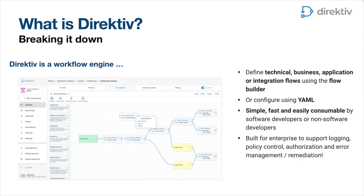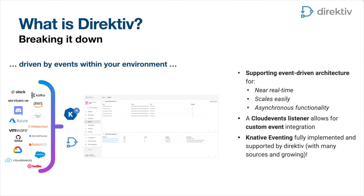In line with that, we've built in enterprise support for logging, policy control, authorization, error management, and the ability to catch and remediate errors. Directive is an event-driven architecture — an event-driven workflow solution and orchestration engine. The reason we chose events is to keep near real time. Event workflows also scale really easily as they are not bound by top-end or master workflows, and you have the benefit of asynchronous capabilities.